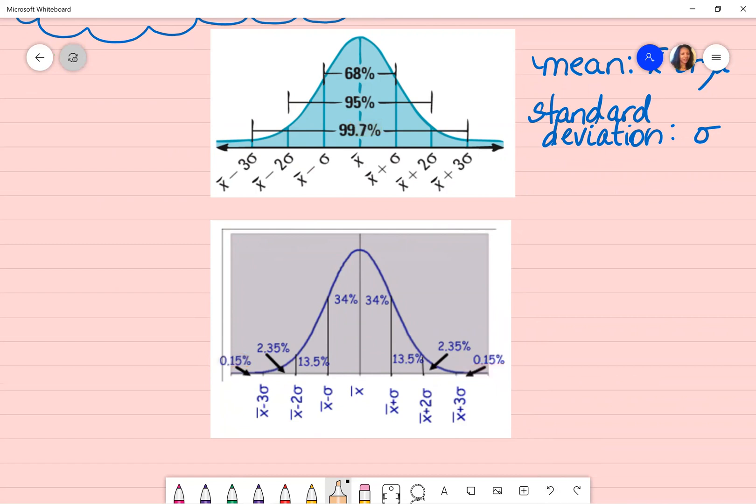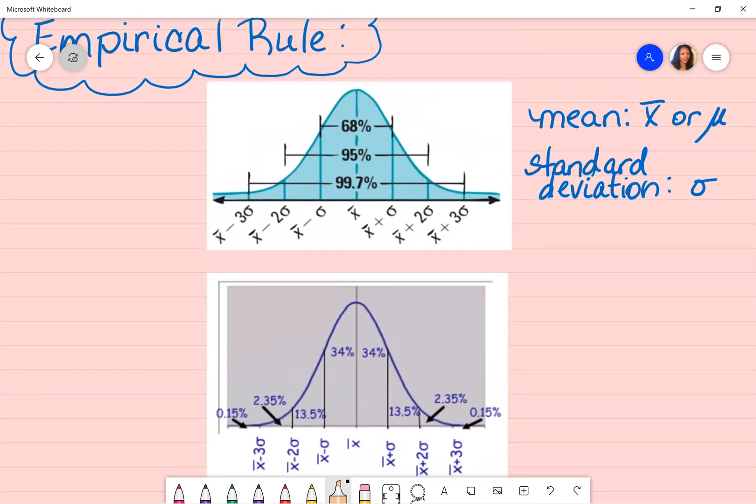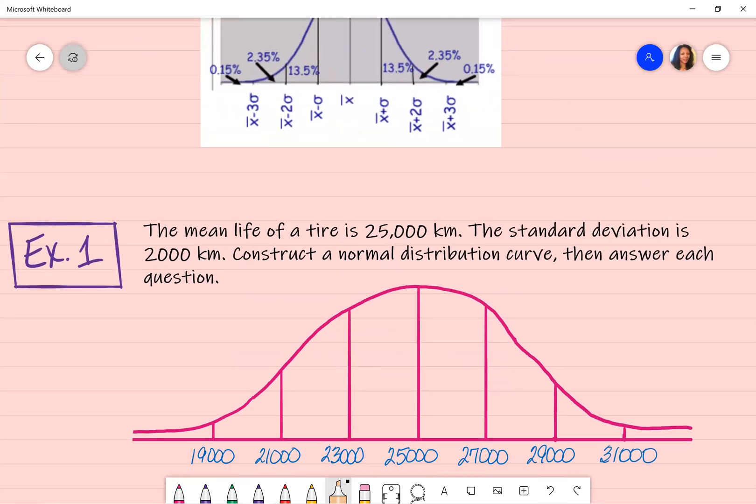When I am constructing my bell curve, I want to make sure that my mean is in the middle and I go out three standard deviations in either direction. You also need to know the symbols. The symbols that you will see for mean are the x-bar and mu. And for your standard deviation, you will see the sigma notation. You're going to actually have numbers here, but this is just a quick way to identify what's one standard deviation away from the mean, so on and so forth. Let's go on to our examples.